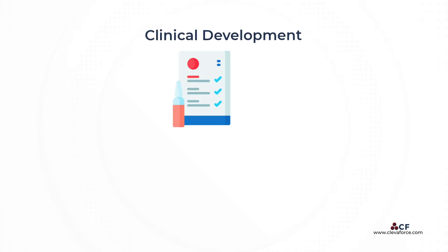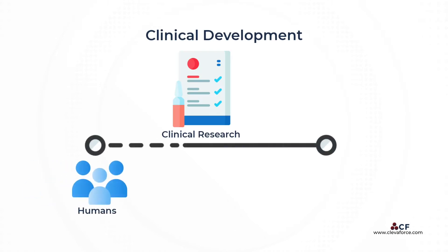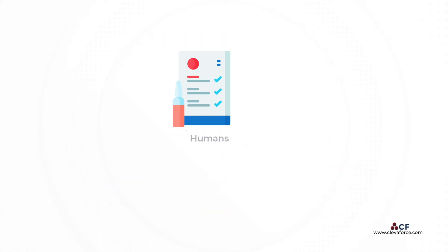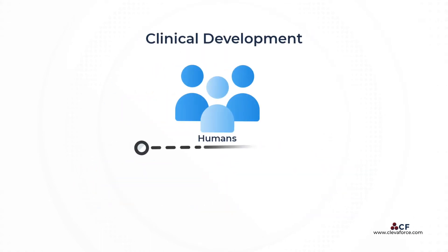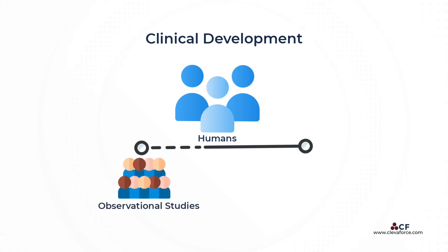Clinical development, also called clinical research, are studies carried out in humans, as opposed to animals or in test tubes. There are two types of clinical development: observational studies, which are cohort studies, and clinical trials, which are experimental studies.